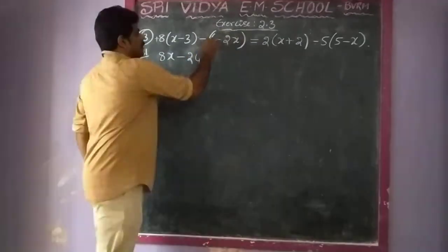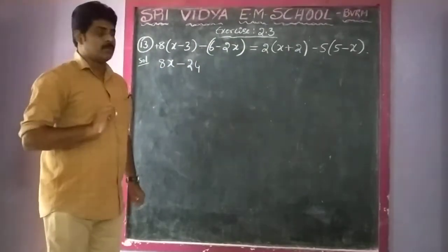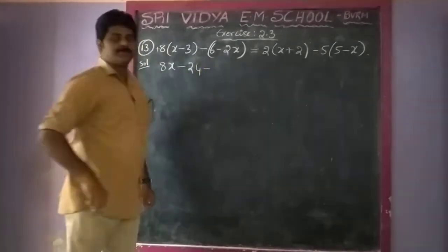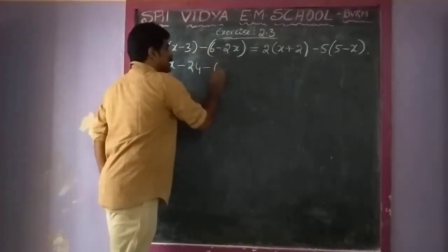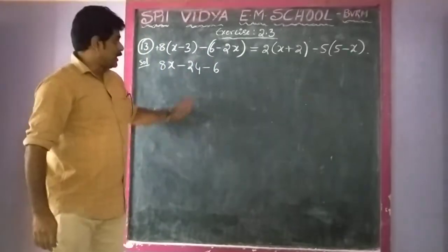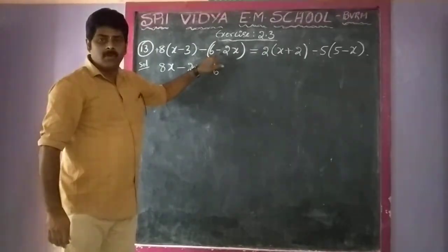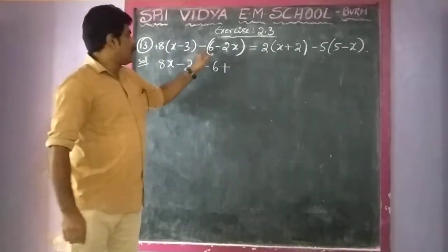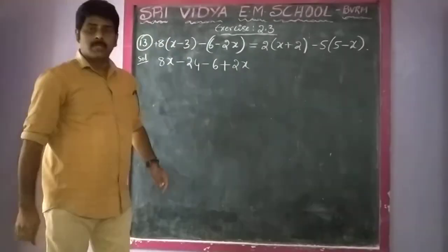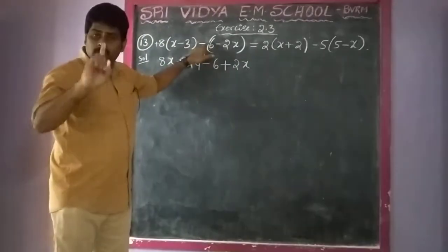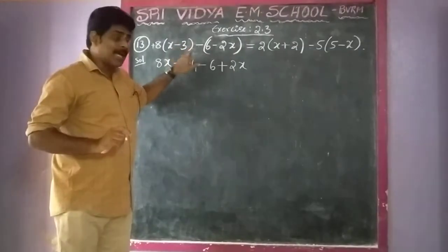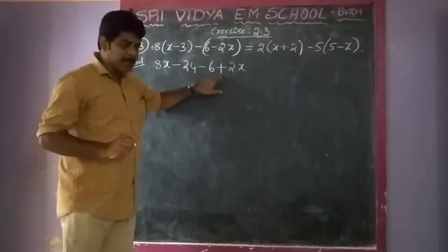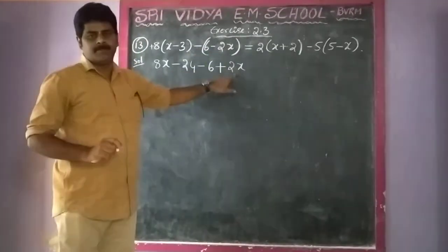After that, look carefully: minus sign outside. Minus into plus gives minus, so minus 1 into 6 gives 6. And minus into minus gives plus, so 1 into 2x gives 2x. So we have minus 6 plus 2x.